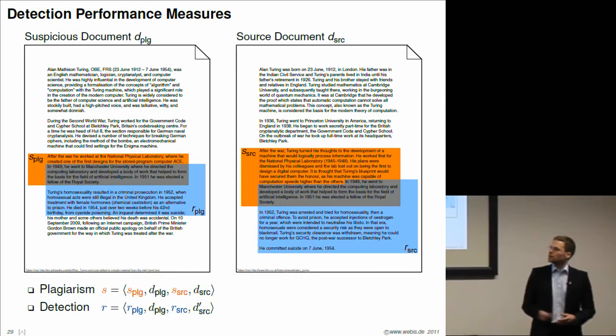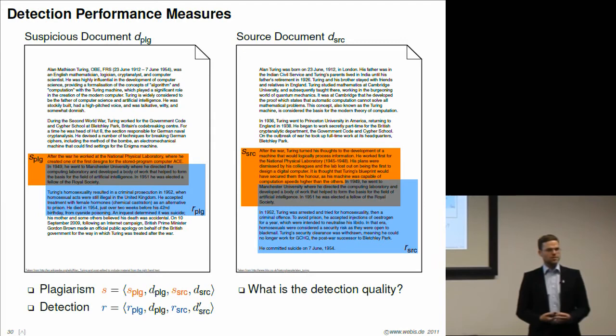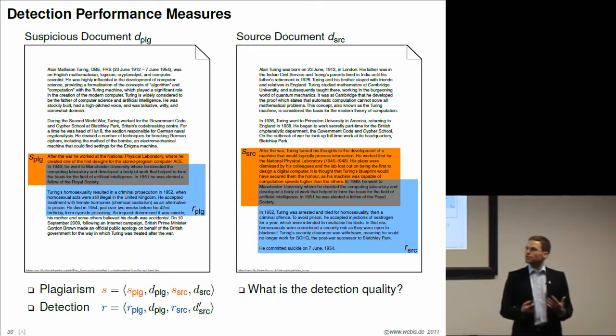It is notated quite similarly, but most obviously there is overlap to the actual plagiarism case, but not entirely. It didn't find everything. Actually, it found more than it was supposed to find. And the big question now is, is this good or is this bad? What is the quality? How can we quantify this quality? How can we compute a value for that in order to say it's good or it's bad?